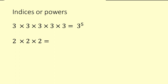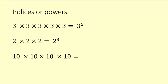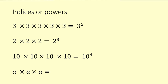So if we had 2 times 2 times 2, what would that be? It would be 2 to the power of 3. And 10 times 10 times 10 times 10 equals 10 to the power of 4. We can also do this with algebraic terms like a, so a times a times a is a to the power of 3.